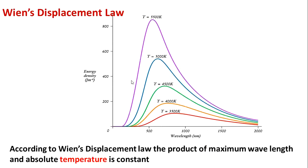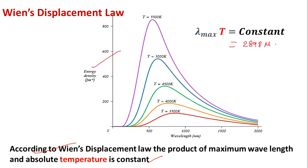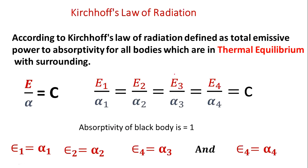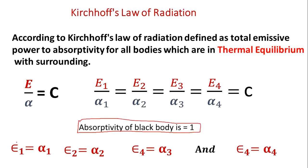For maximum displacement, write the sketch first, then the statement, then the equation: lambda-max times absolute temperature equals 2898 micrometer-Kelvin. Kirchhoff's Law of Radiation: According to Kirchhoff's Law, the ratio of total emissive power to absorptivity of all bodies in thermal equilibrium with their surroundings is constant — E1/alpha1 = E2/alpha2 = E3/alpha3 = constant. For a black body, absorptivity alpha equals 1, therefore emissivity epsilon equals absorptivity alpha.